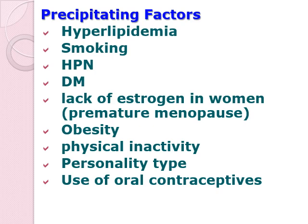Type D personality involves combined negative affectivity and social inhibition. These individuals tend to have more cardiac symptoms but are less likely to report them. It has been reported that they have increased disease severity, increased cardiac mortality, impaired health status, more depressive symptoms, and are linked to more fatal cardiac events.